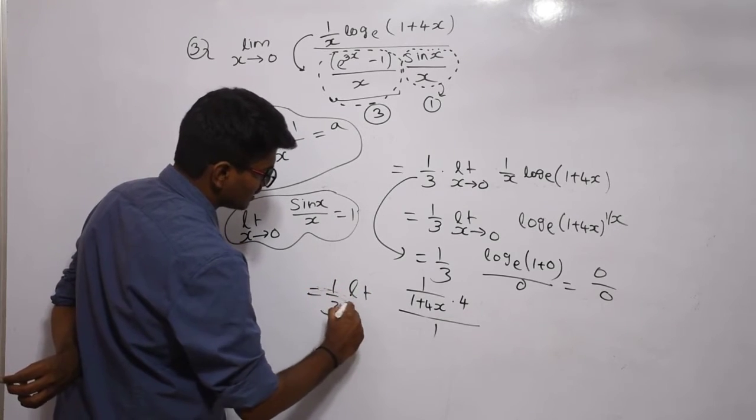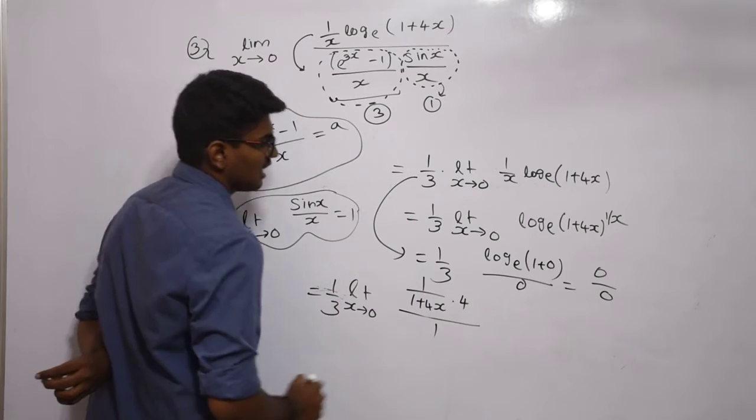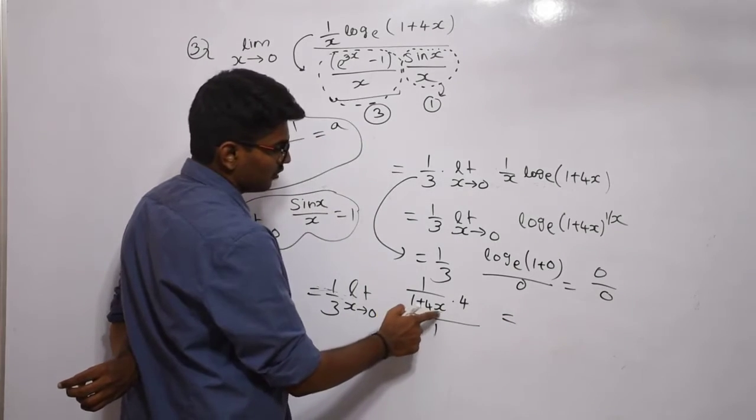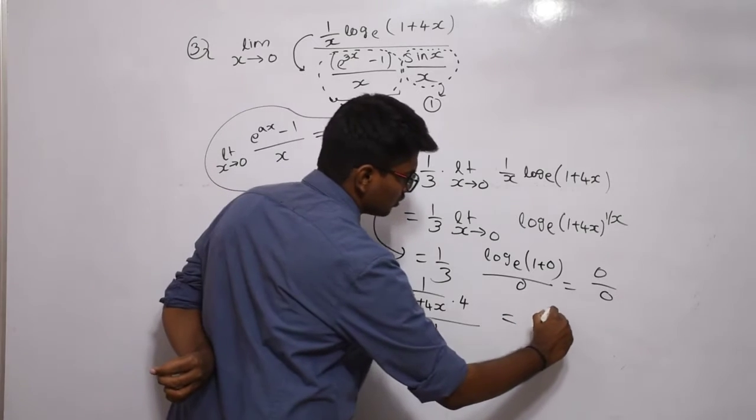If I substitute x = 0 here, what happens? 1 plus 4(0) is 1, so we get 4/1, which is 4.